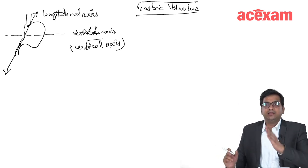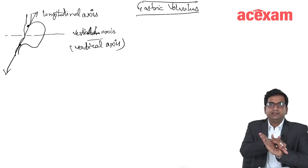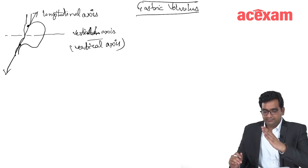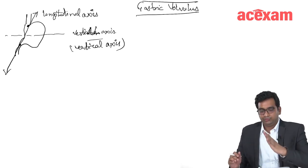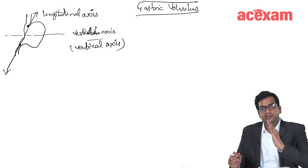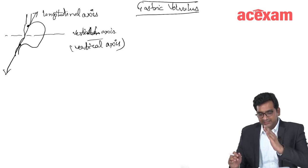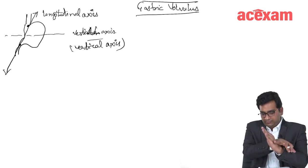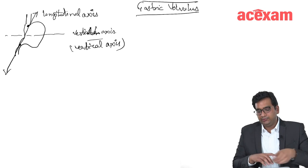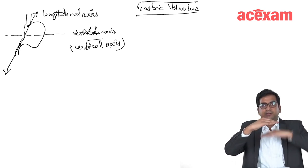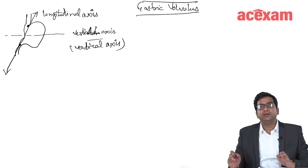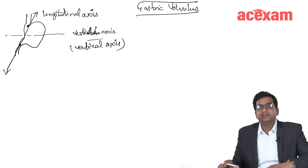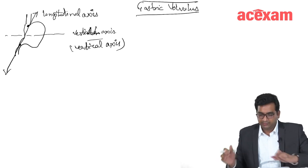Most commonly, the gastric volvulus occurs along this longitudinal axis, and this type of volvulus is the most common and is known as organoaxial volvulus. Organoaxial volvulus is the volvulus of the stomach along the longitudinal axis. The volvulus along the vertical axis of the stomach is known as mesenteroaxial. Most common type is organoaxial.